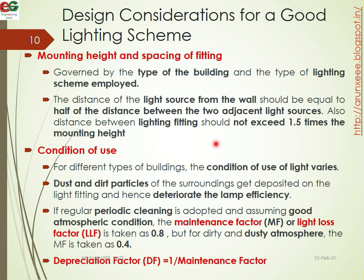Next is the condition of use for different types of buildings. Dust particles and other particles from the surroundings are deposited on the light fittings, hence deteriorating the lamp efficiency. If regular periodic cleaning is adopted and good atmospheric conditions are assumed, the maintenance factor or Light Loss Factor (LLF or MF) should be considered as 0.8. In a dirty or dusty atmosphere, we consider 0.4.